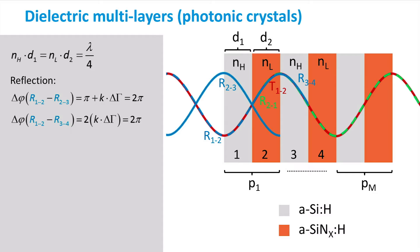The wave reflected at the 3-4 interface will also interfere at the 1-2 interface. As this wave was reflected when propagating towards a low refractive index, it will not experience a 1π phase shift. The optical path length difference, however, is twice as long, which means that it still has a 2π phase shift with respect to the wave reflected at the 1-2 interface. We can see that regardless of the number of dielectric layers, the reflected wave at each interface will exhibit constructive interference.